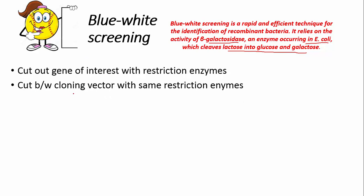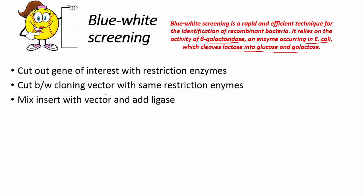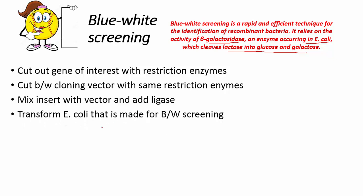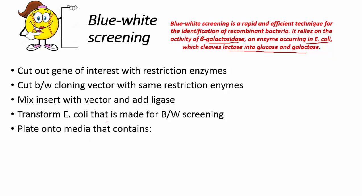We cut the cloning vector with the same restriction enzyme, then mix our insert with the vector and DNA ligase. We then transform E. coli with the vector and place them onto media.